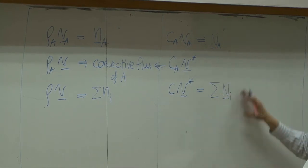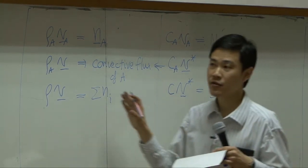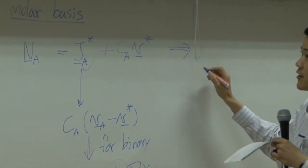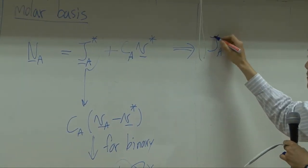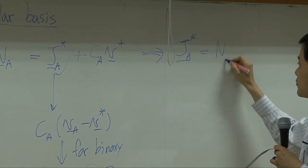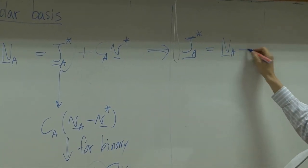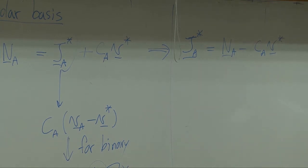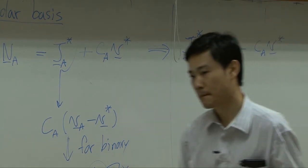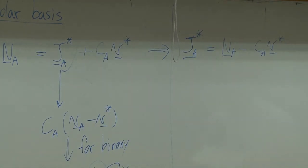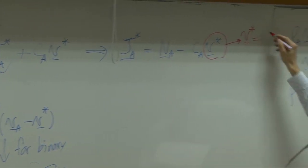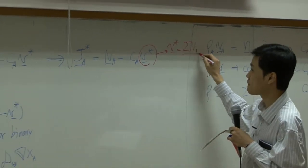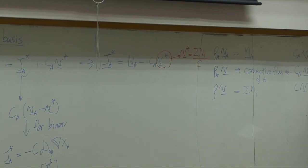So taking this relationship back to this board, if you rearrange the equation here, you can get capital J_A star equal to capital N_A subtracted by CAV star. And then V star should equal to summation of N_I over concentration here, according to this relationship.